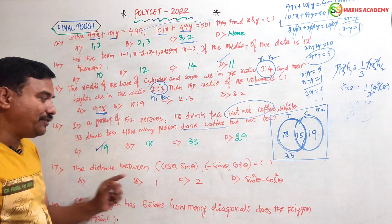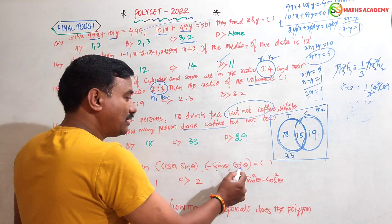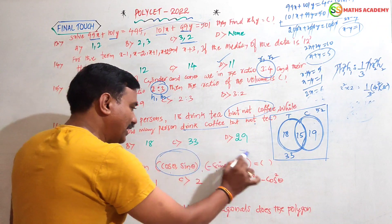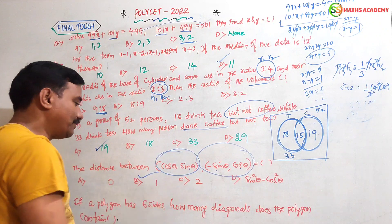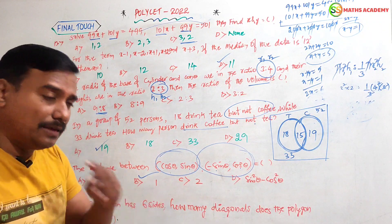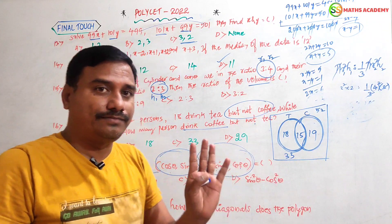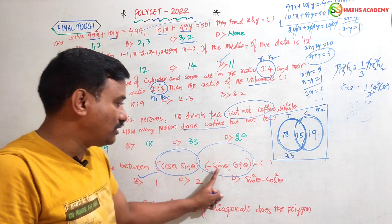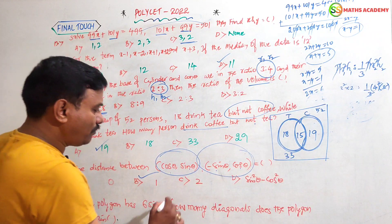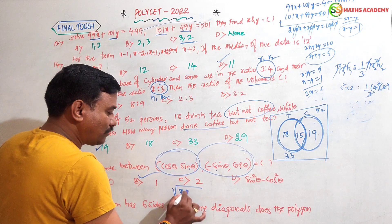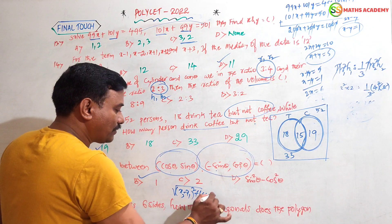Next: questions involving distance between (cosθ, sinθ) and (-sinθ, cosθ). You should blindly answer 1. That is because sin²θ + cos²θ = 1 always. When you apply the distance formula — √((x2-x1)² + (y2-y1)²) — you will always get 1.